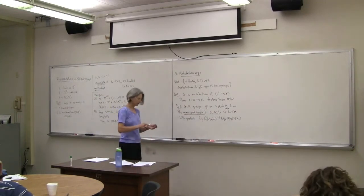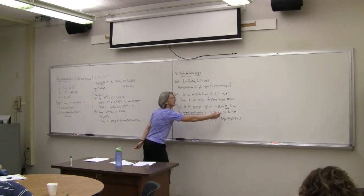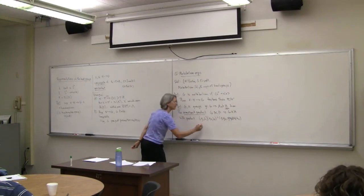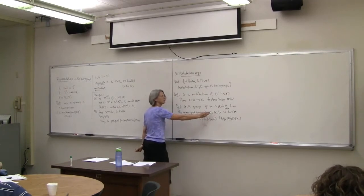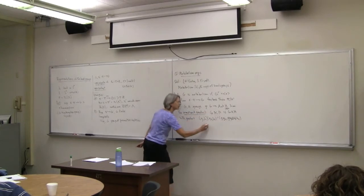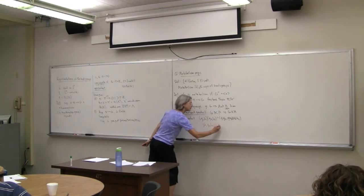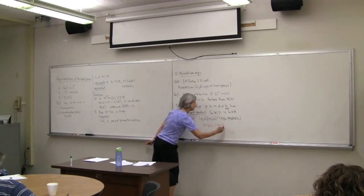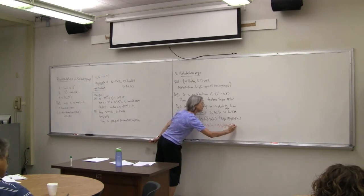If you want to be a little less formal, every element in the semi-direct product has a unique representation as an element of G multiplied on the right by an element of H. If you want to commute the G element past the H element, you just apply φ(G₂) to H₁, and then H₂.